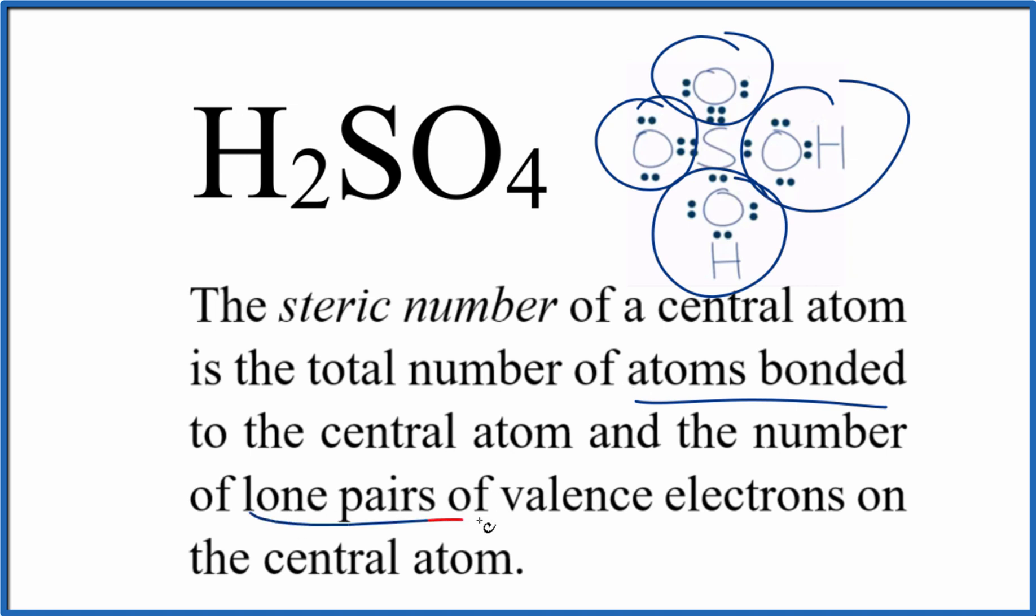Then we want to look at the lone pairs of valence electrons on the sulfur. The thing is, there are no lone pairs. All of these electrons here, they're between atoms, so they are bonded. Those are chemical bonds. So there are no lone pairs on the central sulfur.